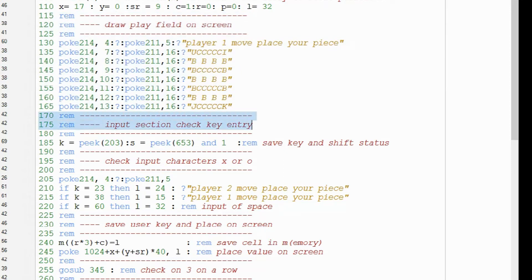Then we need some code to read the key input. For this we use peek 203 and peek 653. The first is the key input and the second is to validate if the shift key is also pressed.